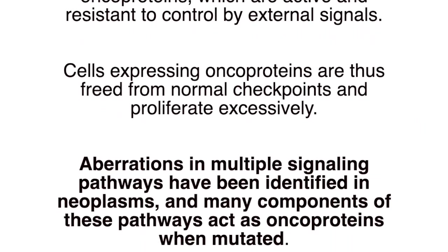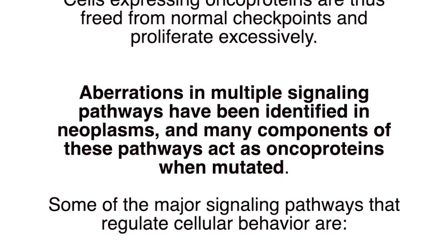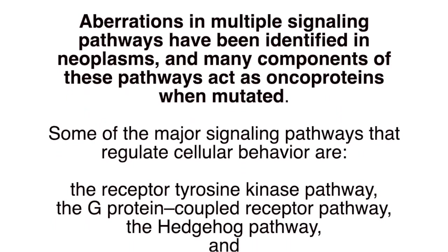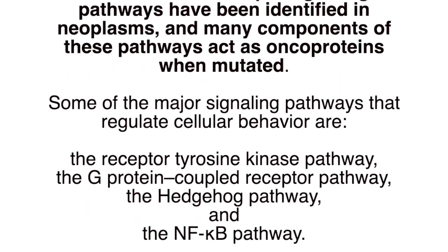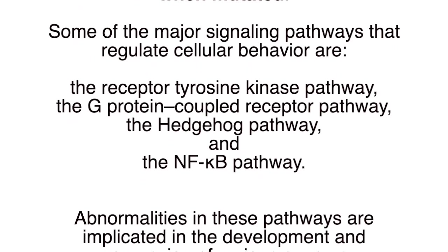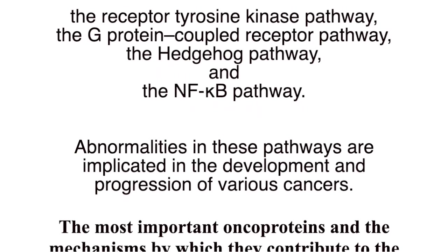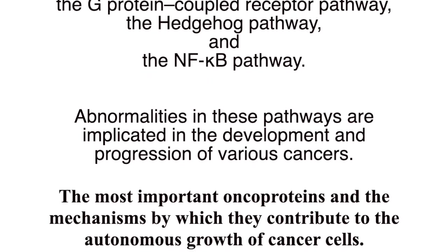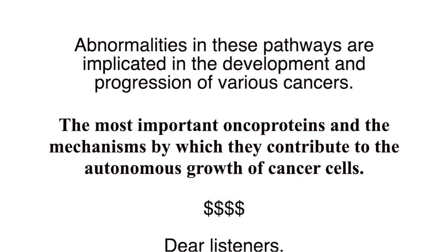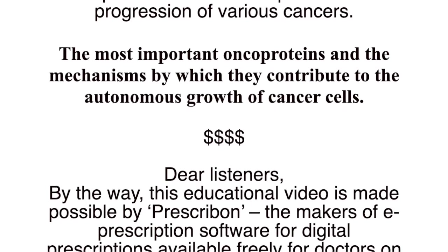Alterations in multiple signaling pathways have been identified in neoplasms, and many components of these pathways act as oncoproteins when mutated. Some of the major signaling pathways that regulate cellular behavior are the receptor tyrosine kinase pathway, the G-protein coupled receptor pathway, the Hedgehog pathway, and the NFKB pathway. Abnormalities in these pathways are implicated in the development and progression of various cancers. The most important oncoproteins and the mechanisms by which they contribute to autonomous growth of cancer cells are discussed below.